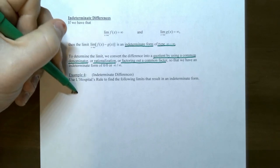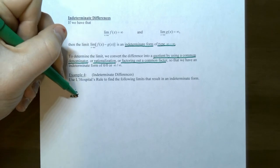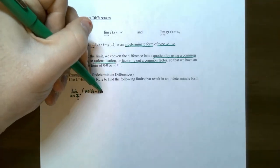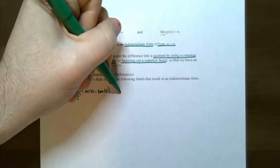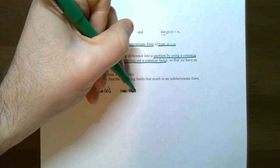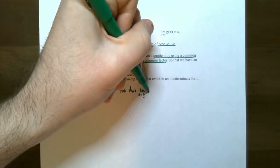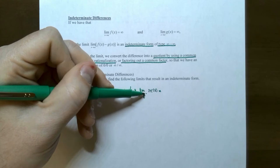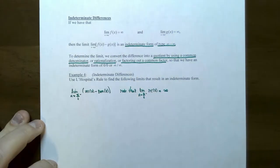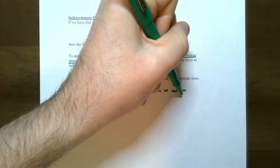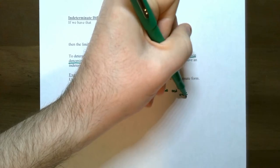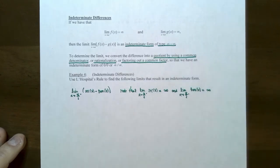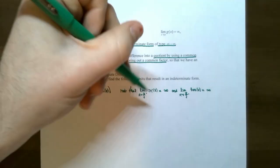Let's find the limit as x approaches pi over 2 from the left of secant of x minus tangent of x. The limit of secant of x as x approaches pi over 2 from the left gives infinity, since secant has a vertical asymptote at pi over 2. The limit of tangent of x as x approaches pi over 2 from the left also gives infinity. So we have an indeterminate difference: infinity minus infinity.